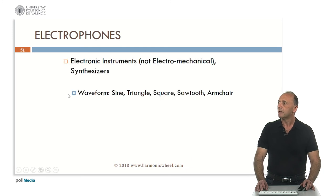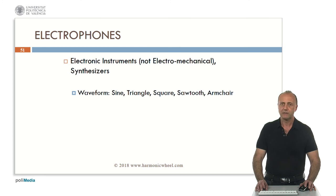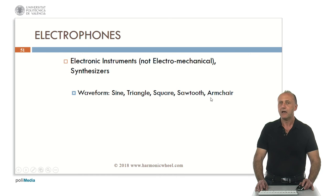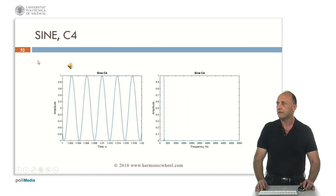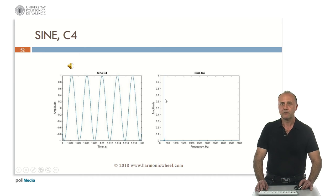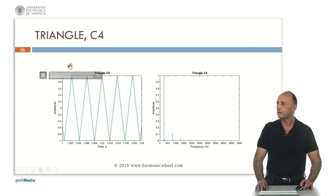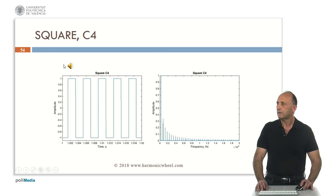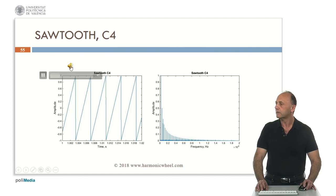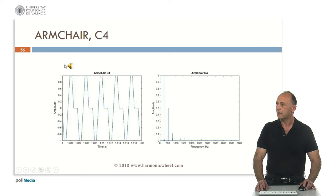Now let's analyze the electrophones. Here we include only pure electronic instruments — that is, synthesizers. We will analyze the simple waveforms: sine, triangle, square, and sawtooth. I also included a new waveform developed by me which I call 'armchair' because of its shape. The sine wave at C4 is a pure harmonic. The triangle and square only have odd harmonics. This is the sawtooth, C4, and this is the armchair waveform.